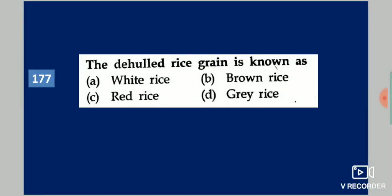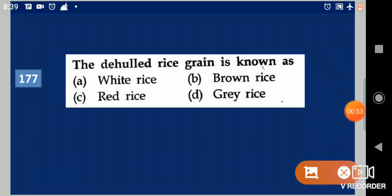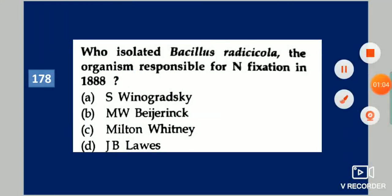Next question: Dehulled rice grain is known as dash. Your options are: white rice, brown rice, red rice, gray rice. Your answer is brown rice.